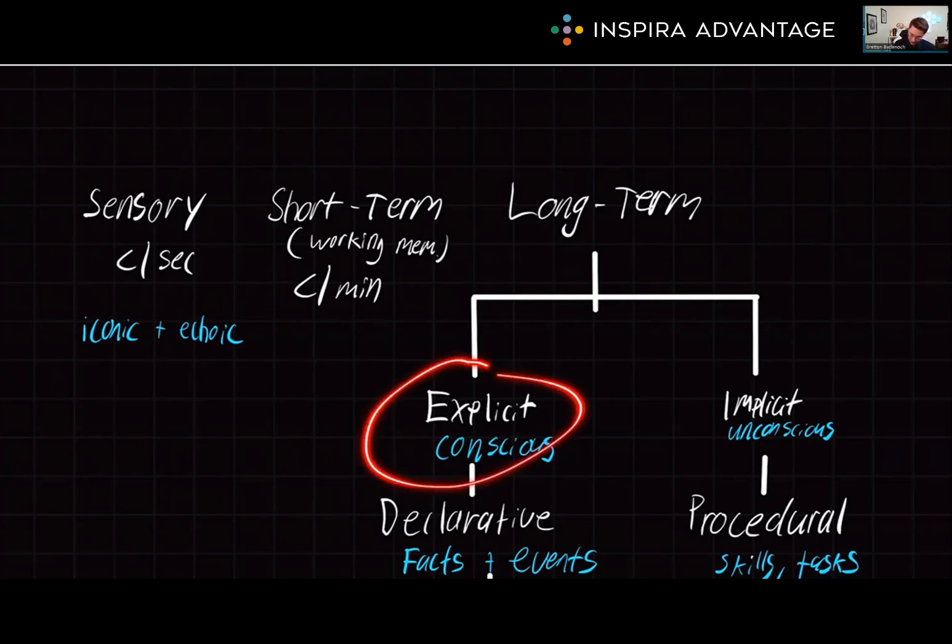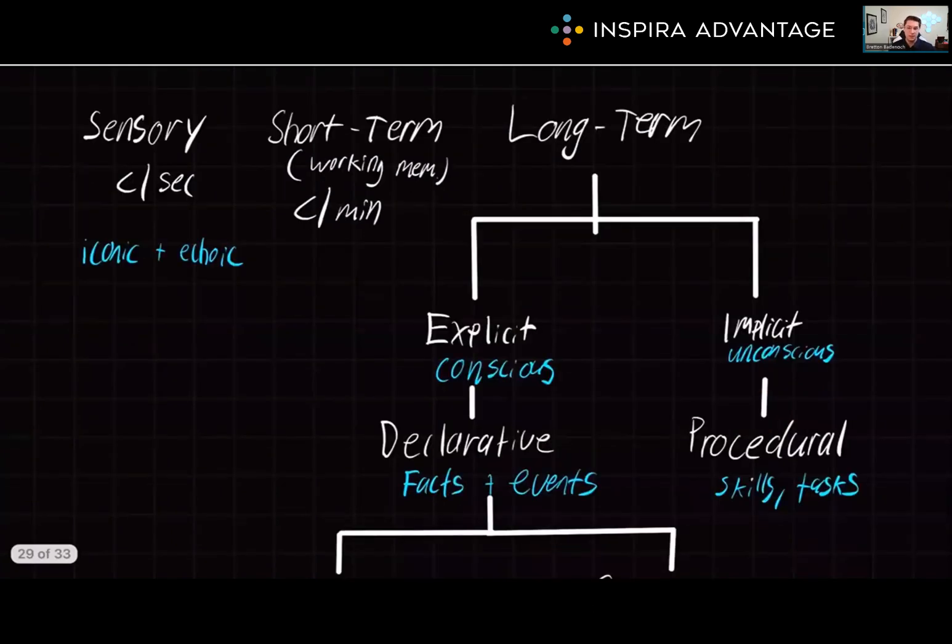Long-term memory is where we have fun dividing this into many different types. We have explicit memory on the left and implicit memory on the right. Explicit memory or declarative memory, it's the same thing, accounts for memories that we must consciously recall with effort and focus. So these include things like episodic memory and semantic memory. Episodic memory is the specific events or experiences, while semantic memory is for general knowledge and facts. On the other hand, our implicit memory is also known as our non-declarative or unconscious memory. This type of memory accounts for acquired skills and conditioned responses to circumstances and stimuli. This includes procedural memory, which is for motor skills and habits. The classic example of a procedural memory is riding a bike. Your body knows how to balance and pedal, even if you haven't ridden a bicycle for years.